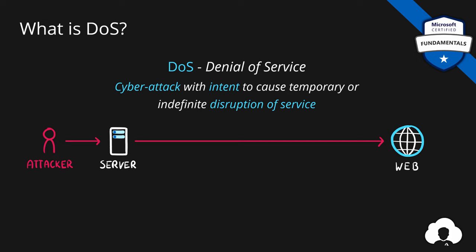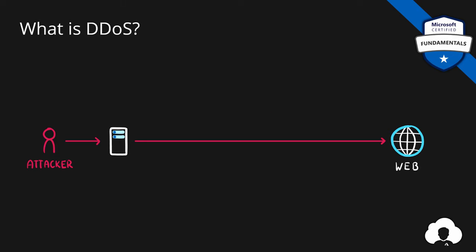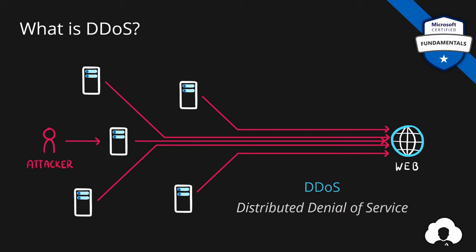In general, denial of service attacks are pretty easy to prevent, because you can just block the IP from which the traffic is originating. This is why most attackers, instead of using one server, will employ multiple servers to attack your web services at the same time. This type of attack is called distributed denial of service, so-called DDoS.